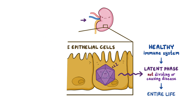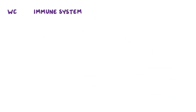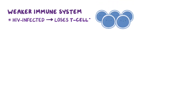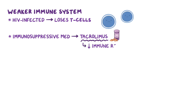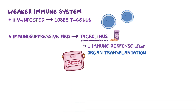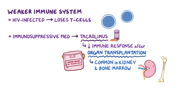But things can change if the immune system gets weaker. This can happen for various reasons, like an HIV-infected individual who loses T cells, or individuals taking immunosuppressive medications like tacrolimus. Tacrolimus is a medication primarily used to reduce the immune response after organ transplantation to prevent transplant rejection. BK virus infection is especially common in kidney and bone marrow transplant recipients.